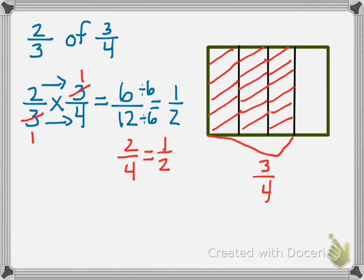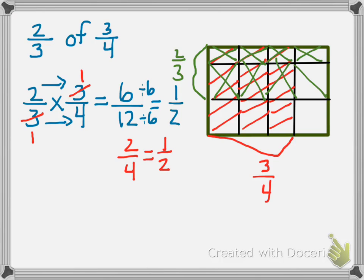Now it says 2 thirds, so now I'm going to partition horizontally into thirds. And I need to show 2 thirds. Let's use a different color. So we're going to show 2 thirds. I like to put an X, that would be 1 third, and that would be 2 thirds.